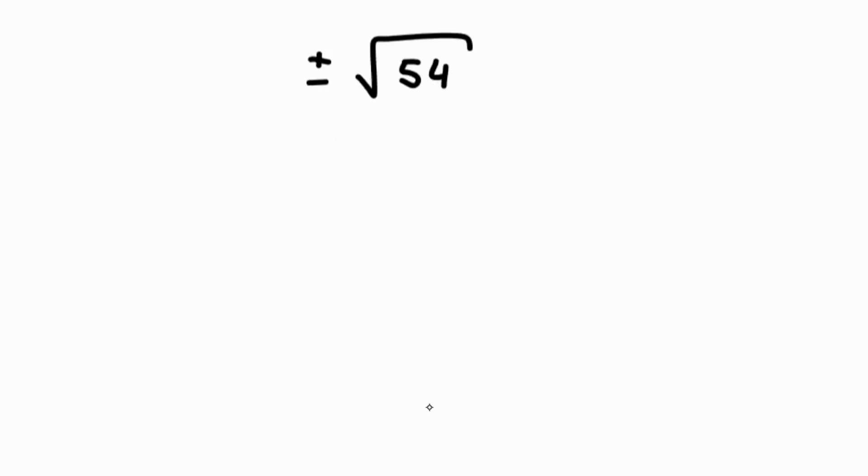A square root can produce a positive value or a negative value. And as a result, you could have plus or minus in front of it, or just plus or just minus. Let's try to simplify this radical. Square root of 54, which we can split into plus or minus 9 times 6.